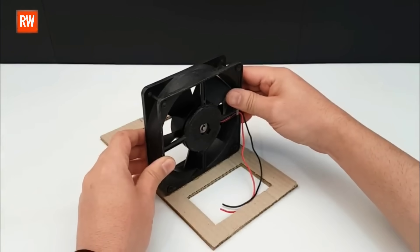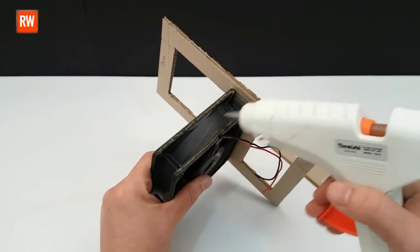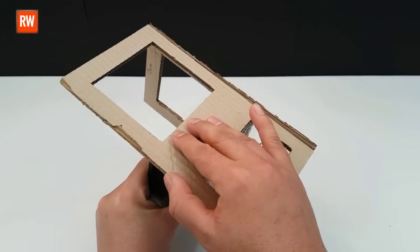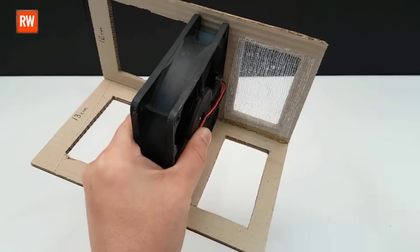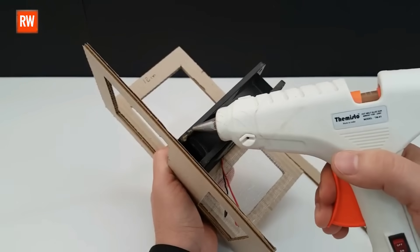Alright friends, now we're moving on to assembling the entire cardboard structure. We'll begin by joining all the individual pieces together carefully. The larger section of cardboard will be placed at the top, which will hold the main components like the fan and UV light, while the smaller section will be positioned at the bottom to allow airflow and support the insect trap.